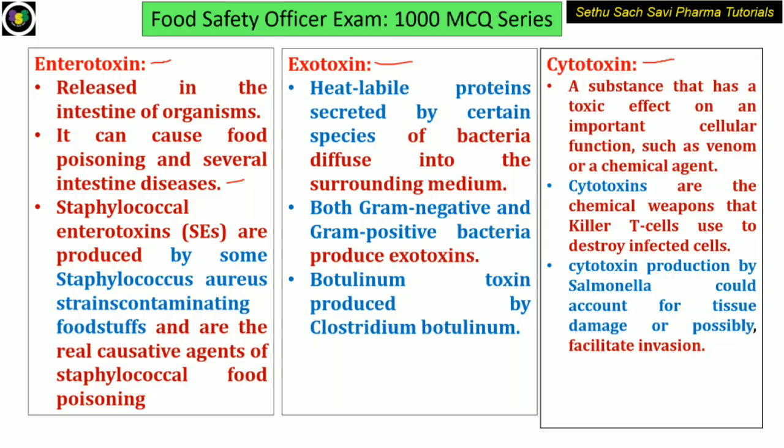Coming to exotoxin: exotoxins are always secreted by certain species into the environment or surrounding. These exotoxins are heat-labile proteins secreted by certain species of bacteria that diffuse into the surrounding media. Both gram-negative and gram-positive bacteria can produce exotoxin. An example is botulinum toxin, which is produced by Clostridium botulinum.